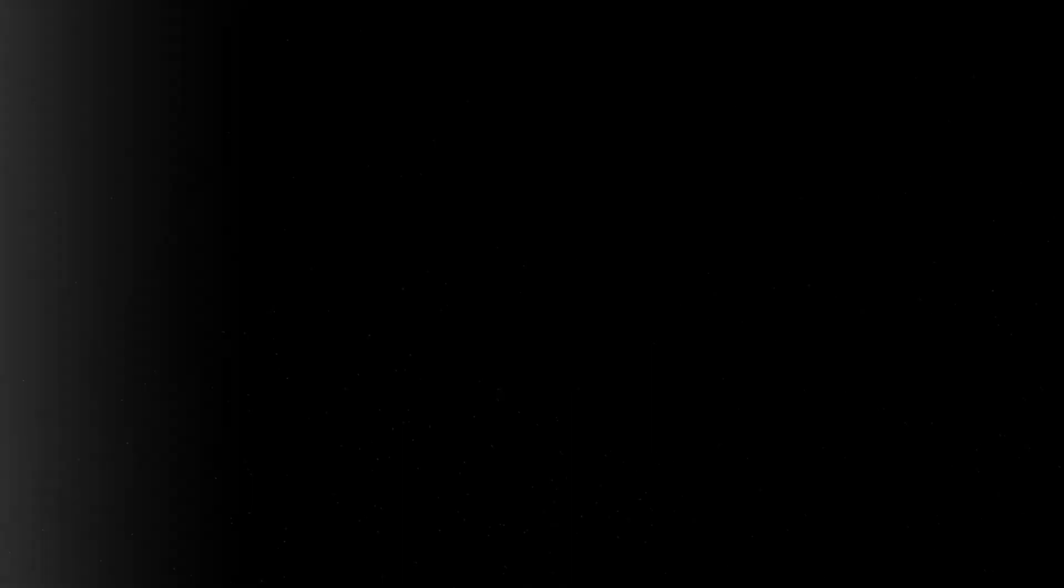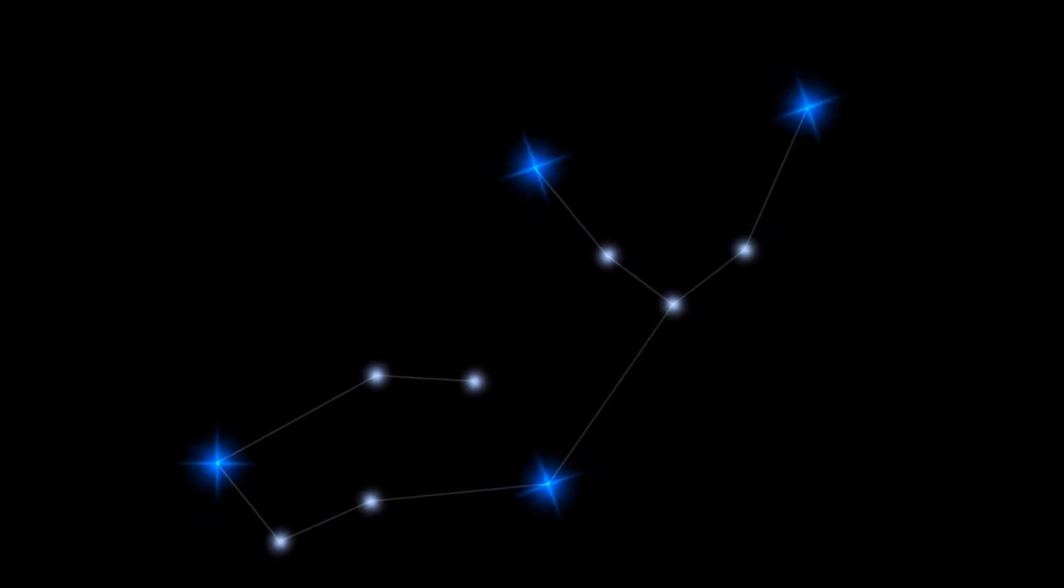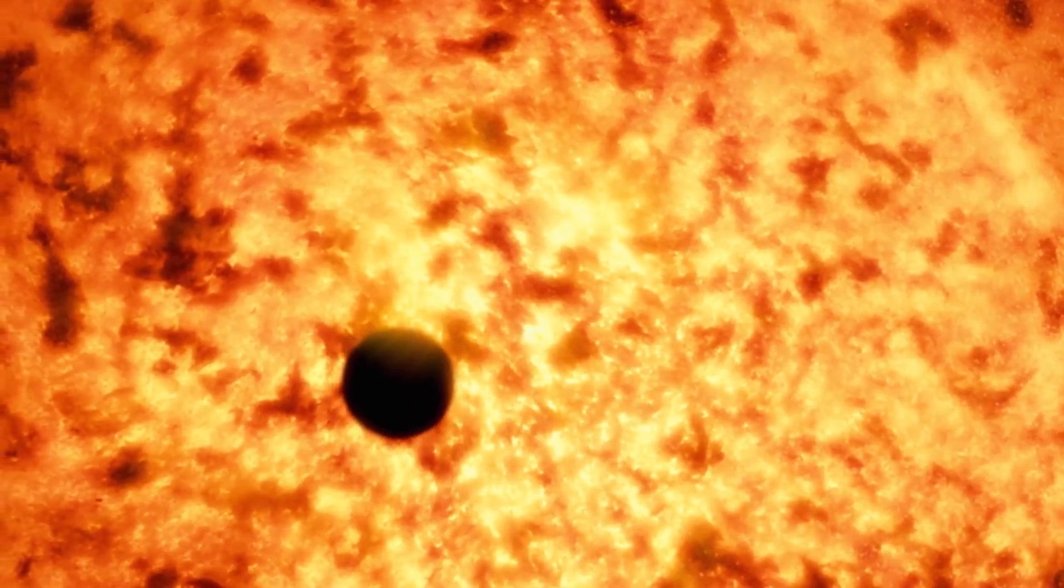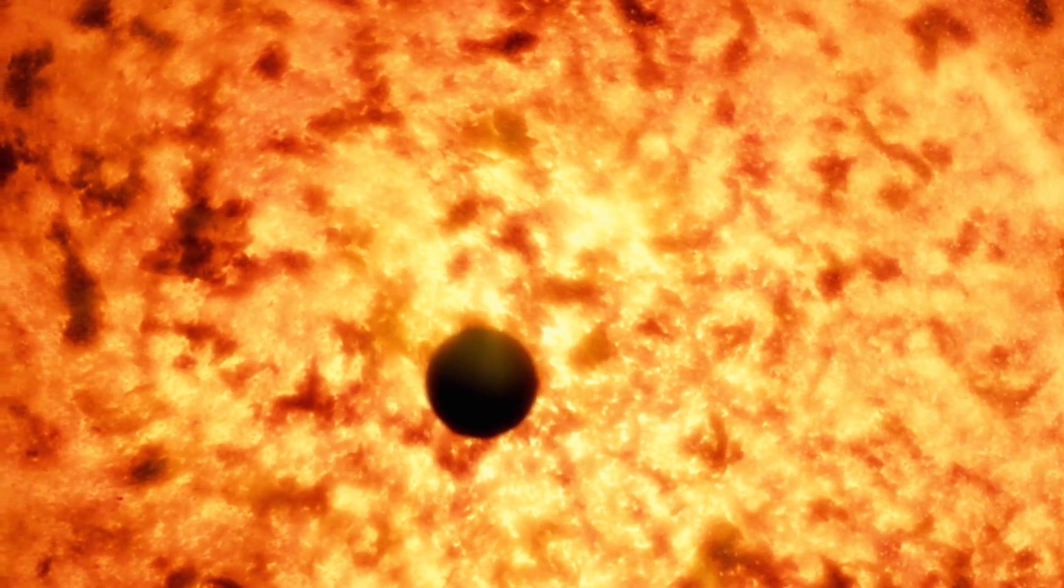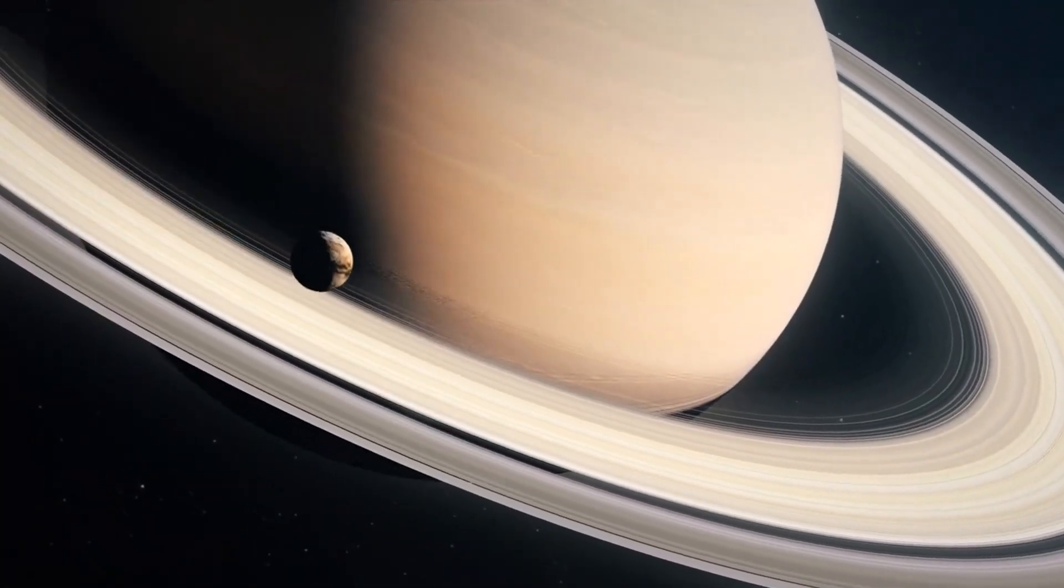Meanwhile, Webb has made a planet circling a star in the constellation Virgo the focus of the most extensive extrasolar planet research to date. The planet's name is WASP-39b, and it's located 700 light-years from our home, approximately eight times closer than Mercury is to the Sun. This gas giant the size of Saturn boils as it orbits its host star.